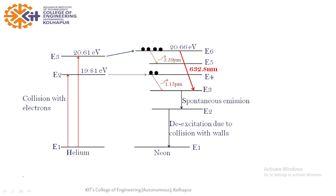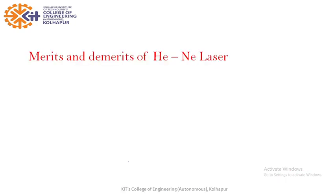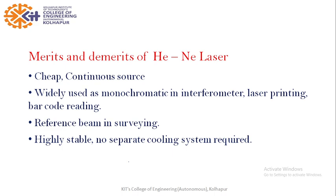So that is the working of Helium-Neon laser, with E4 and E6 as metastable states and three methods to eliminate IR radiation. The merits are: it is very cheap, it is a continuous laser, and it is widely used as a monochromatic source in interferometers, laser printing, and barcode reading. It is highly directional, used as a reference beam in surveying. Using noble gases makes it highly stable with no separate cooling system required. The drawback is very low output power, only 70 to 100 milliwatts.